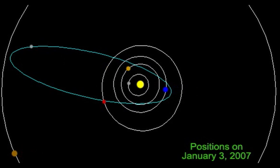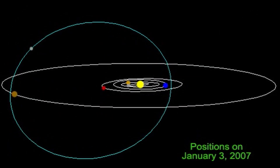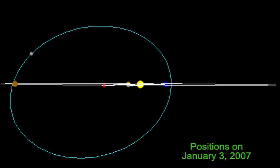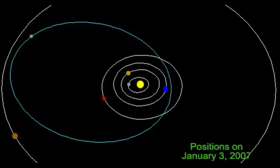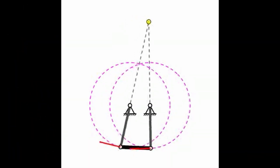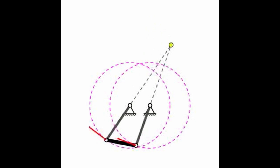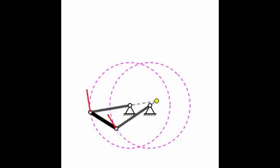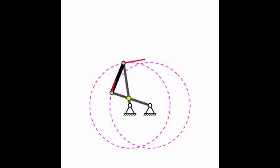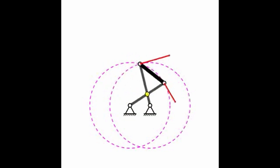In universal algebra, a variety refers to a class of algebras that is closed under homomorphisms, subalgebras, and direct products. Examples include the variety of groups, rings, and lattices. Note that the class of fields is not a variety because it is not closed under direct products.